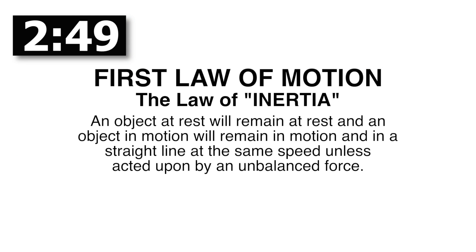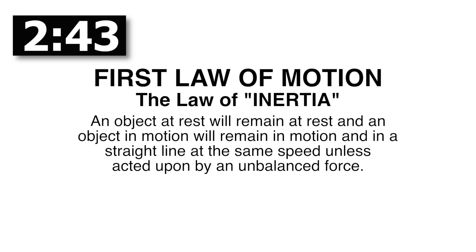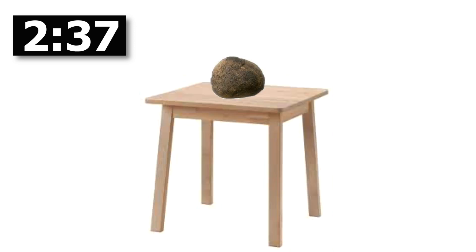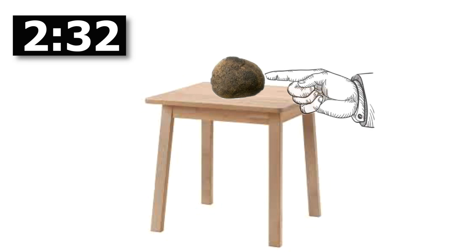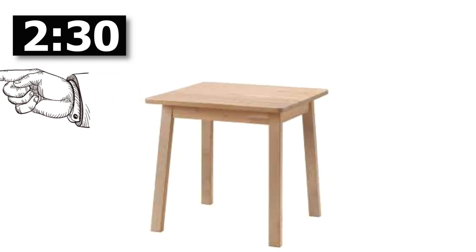The first law of motion — the law of inertia — basically states that an object at rest will remain at rest, and an object in motion will remain in motion in a straight line at the same speed, unless acted on by an unbalanced force. Essentially, if you place a rock on a table it will remain on that table forever unless something with enough force to overcome its inertia gets it moving.